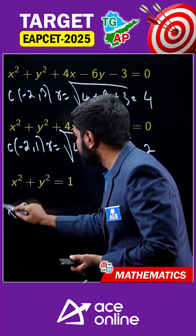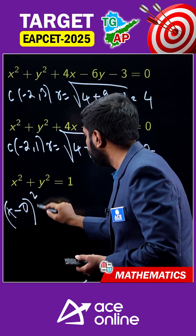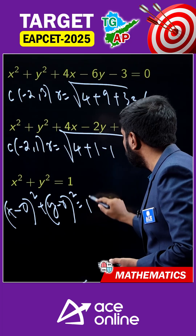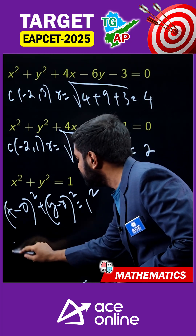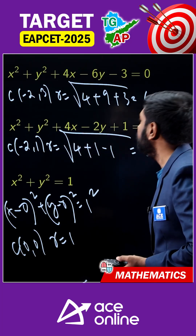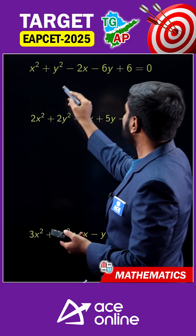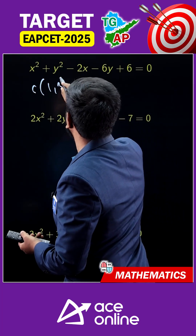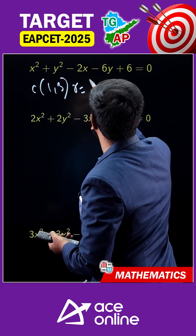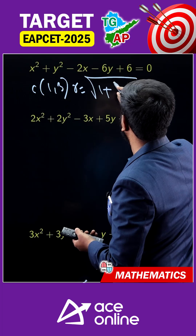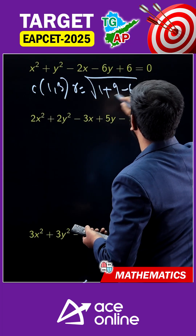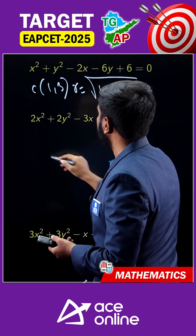Now consider the circle (x - 0)² + (y - 0)² = 1², so center is (0, 0) and radius is 1. For another circle with center (1, 3): radius = root(g² + f² - c) = root(1 + 9 - 6) = root(4) = 2.